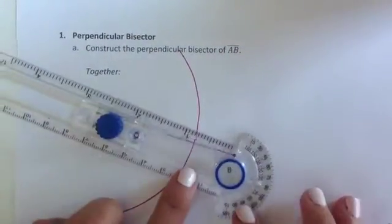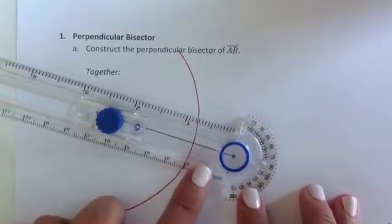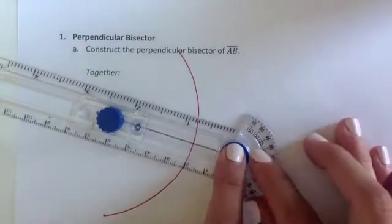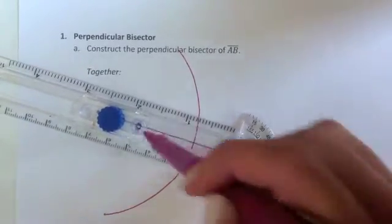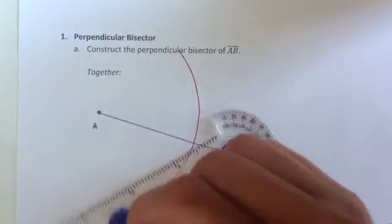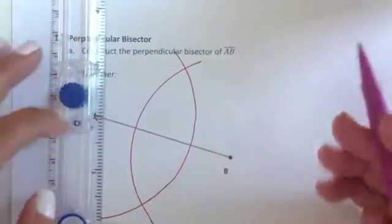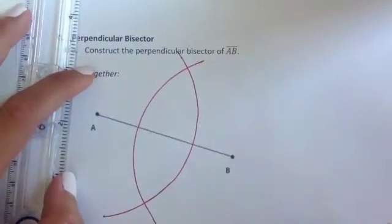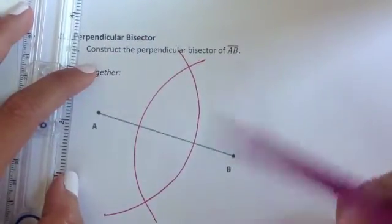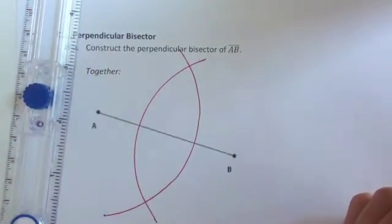Then I'm going to switch and put my center on B. I'm going to do the exact same thing including keeping the same radius. If you were to change the radius you would not get the perpendicular bisector. You would still get a perpendicular line but it wouldn't bisect the segment, meaning it would not cut it in half. It's important to keep the radius the same throughout the construction.